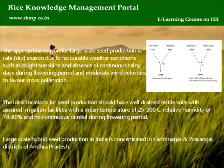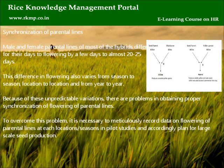Large-scale hybrid seed production in India is concentrated in Karimnagar and Warangal districts of Andhra Pradesh. Synchronization of Parental Lines: male and female parental lines of most hybrids differ in their days to flowering by a few days to almost 20 to 25 days. This difference in flowering also varies from season to season, location to location, and from year to year. Because of these unpredictable variations, it is necessary to meticulously record data on flowering of parental lines at each location or season in pilot studies, and accordingly plan for large-scale seed production.